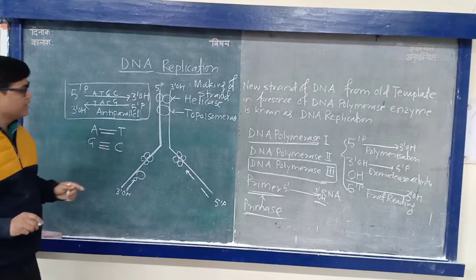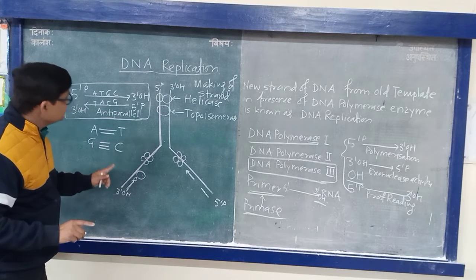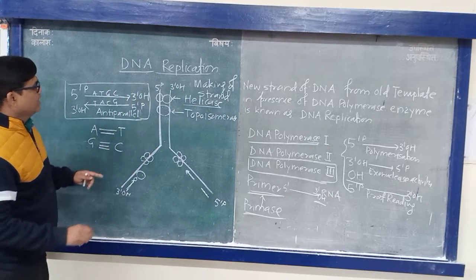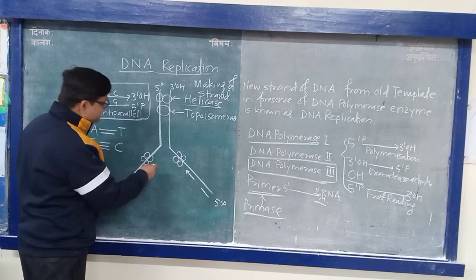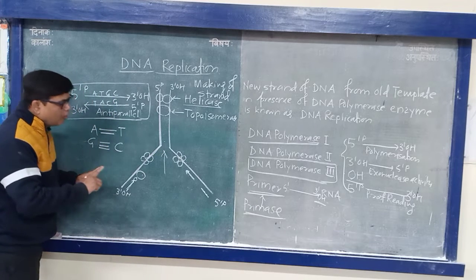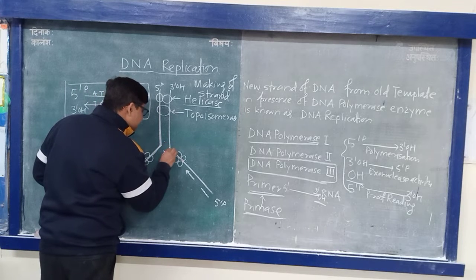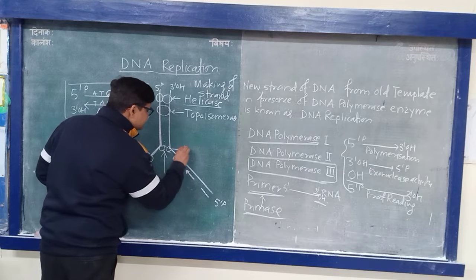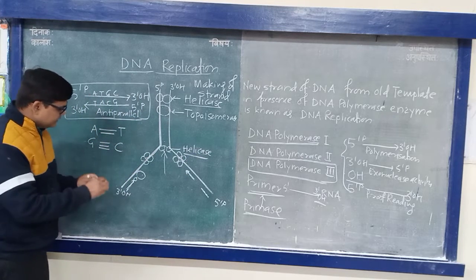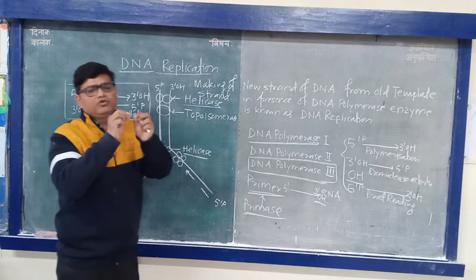So first of all I am going to discuss the different enzymes required in the case of DNA Replication. The first enzyme is Helicase. This Helicase will open the helix — meaning it separates the helix. If this enzyme is present, then both the strands are going to separate.